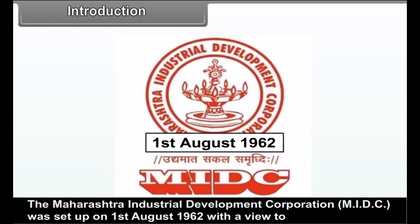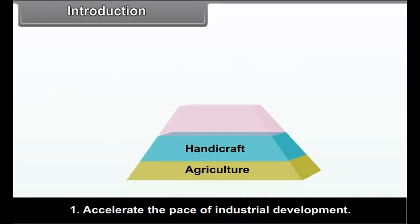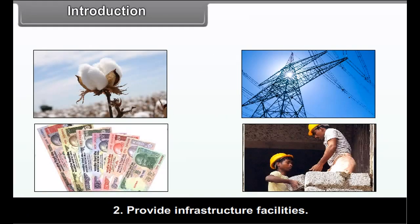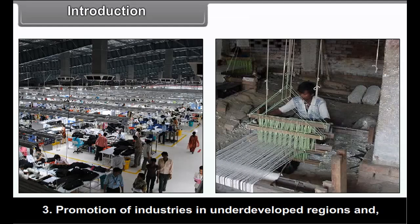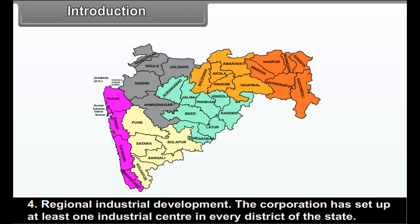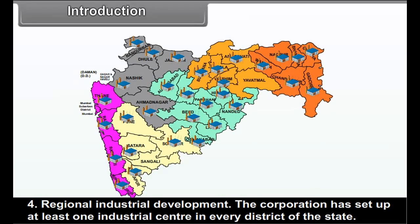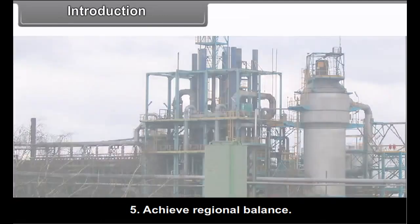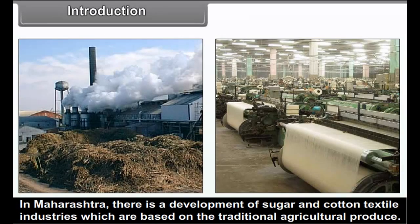The corporation was set up with a view to accelerate the pace of industrial development, provide infrastructural facilities, promotion of industries in underdeveloped regions and regional industrial development. The corporation has set up at least one industrial centre in every district of the state to achieve regional balance.